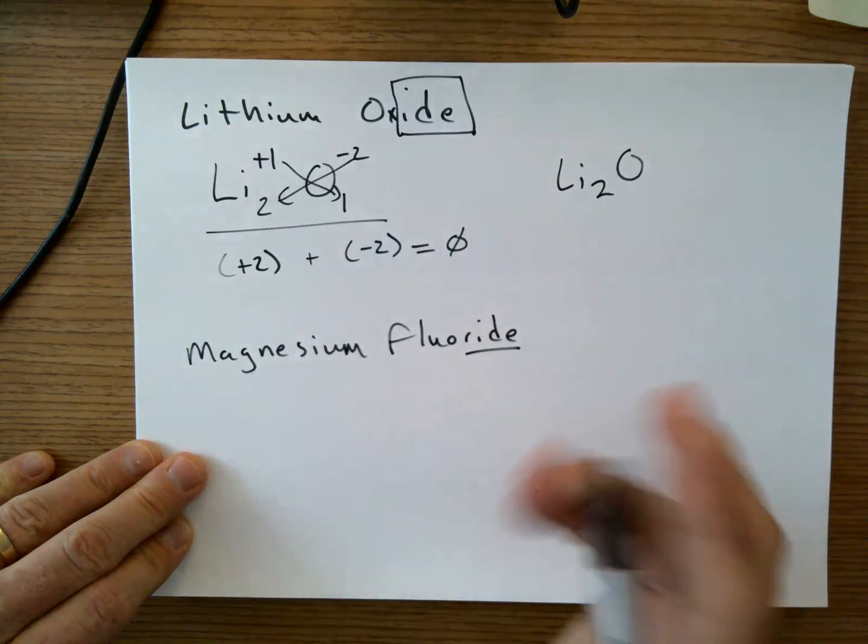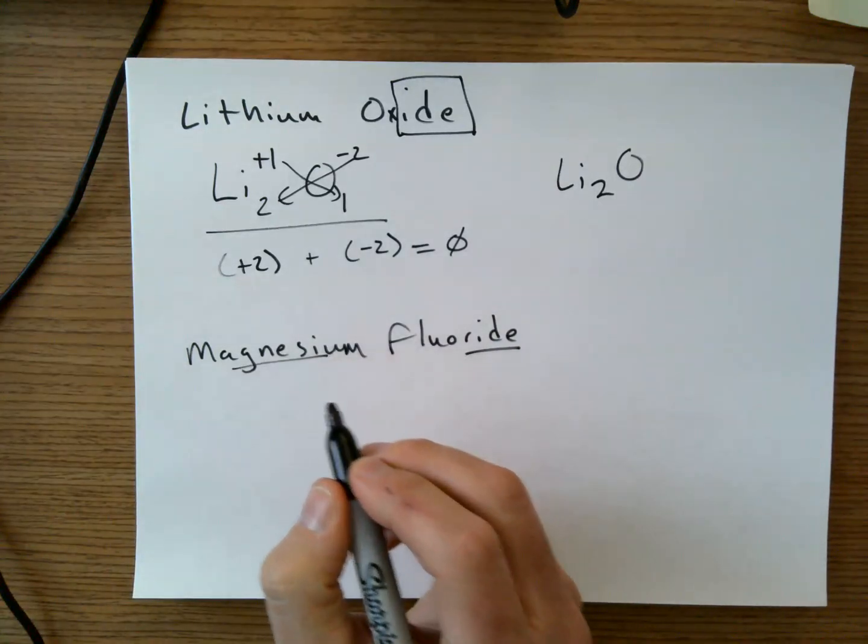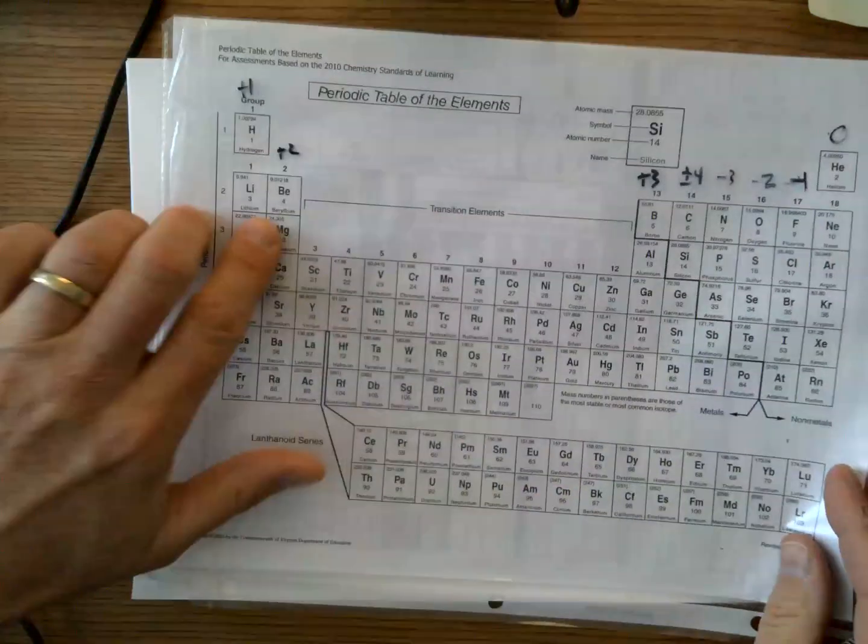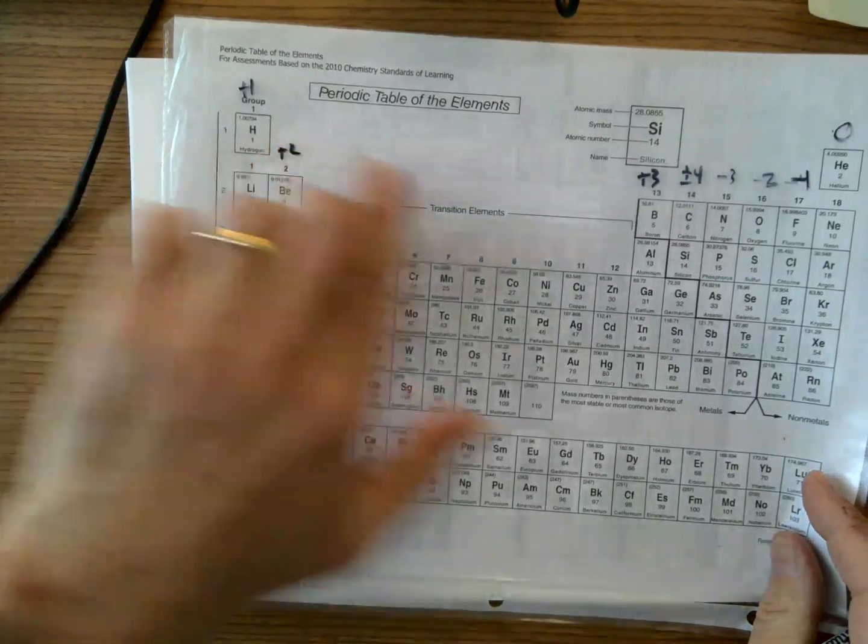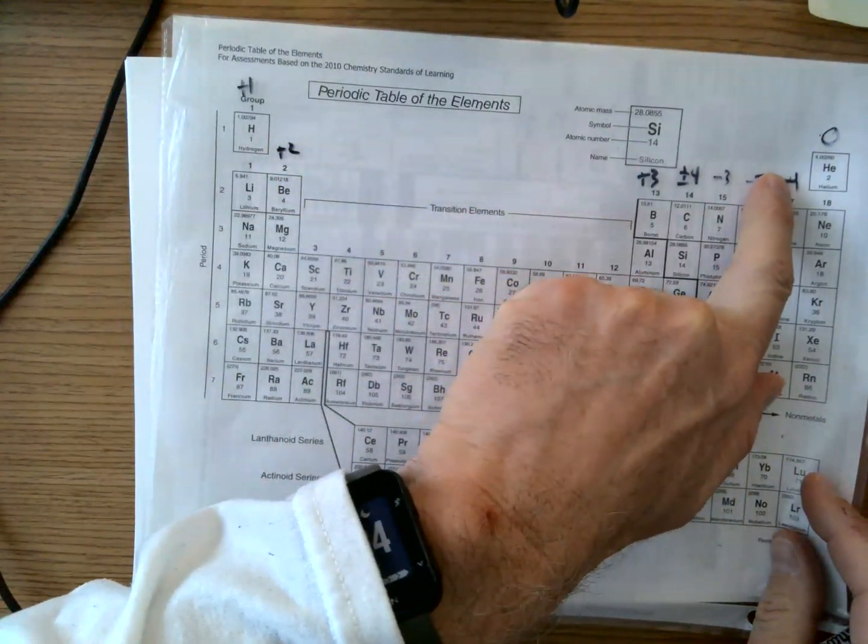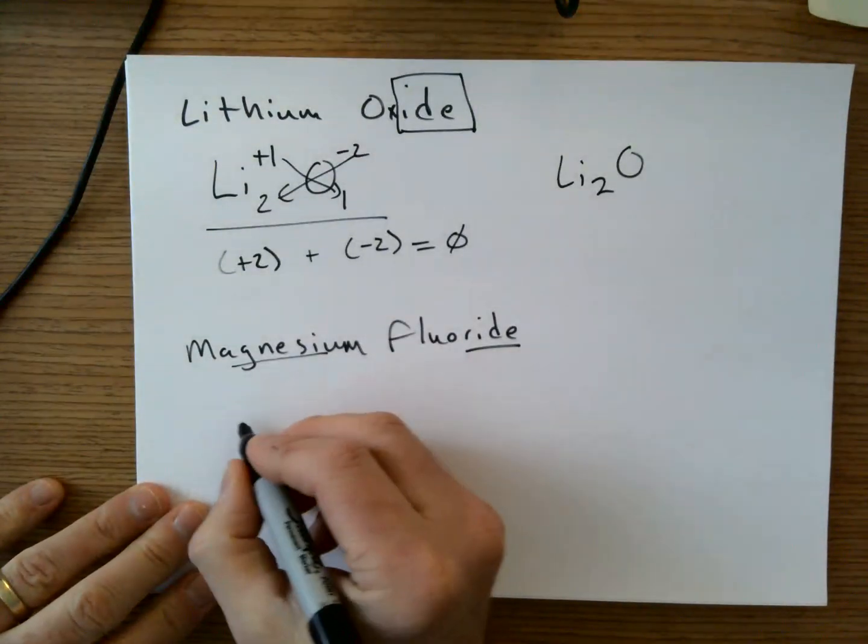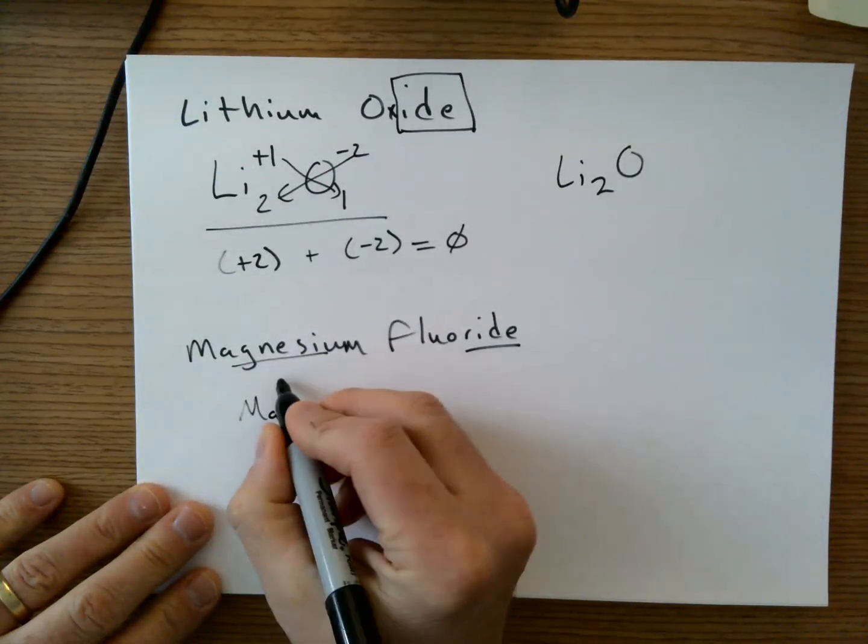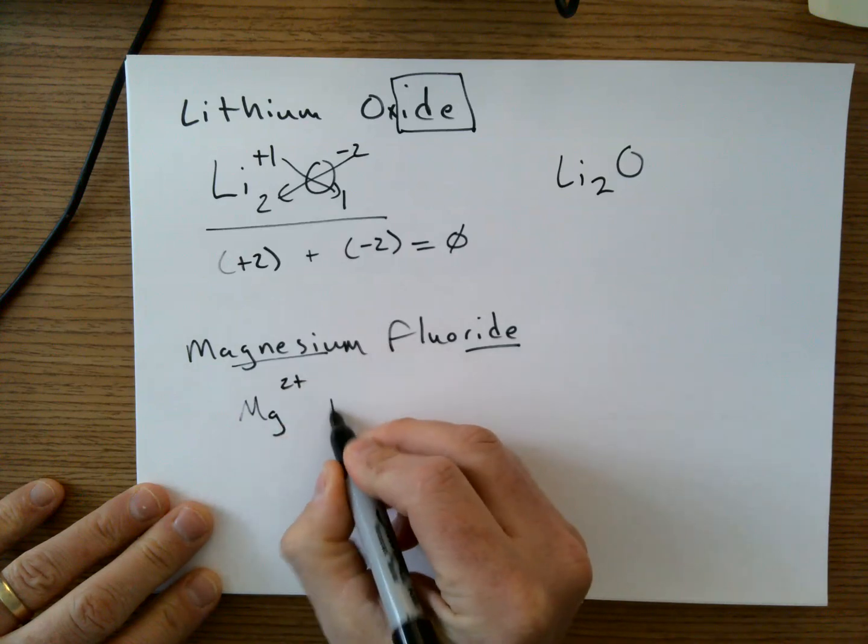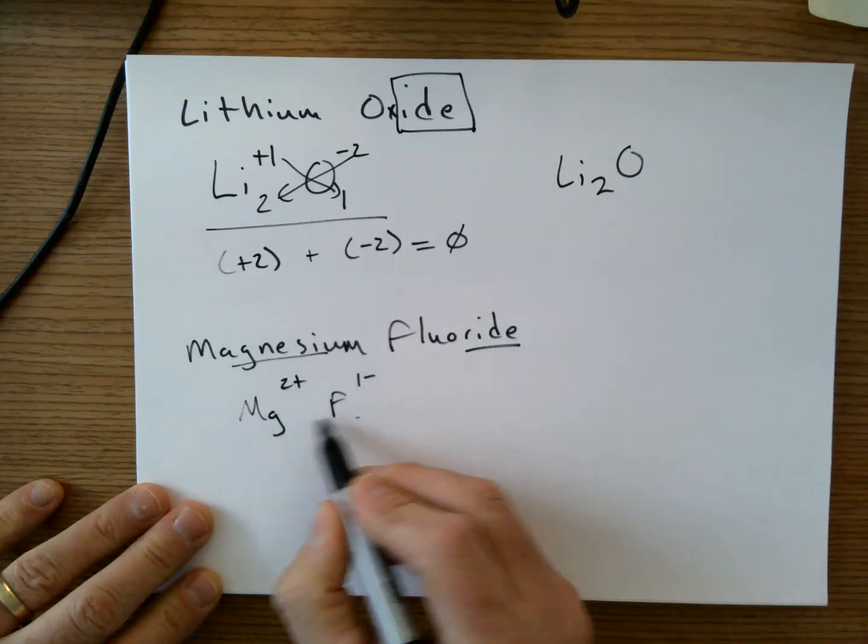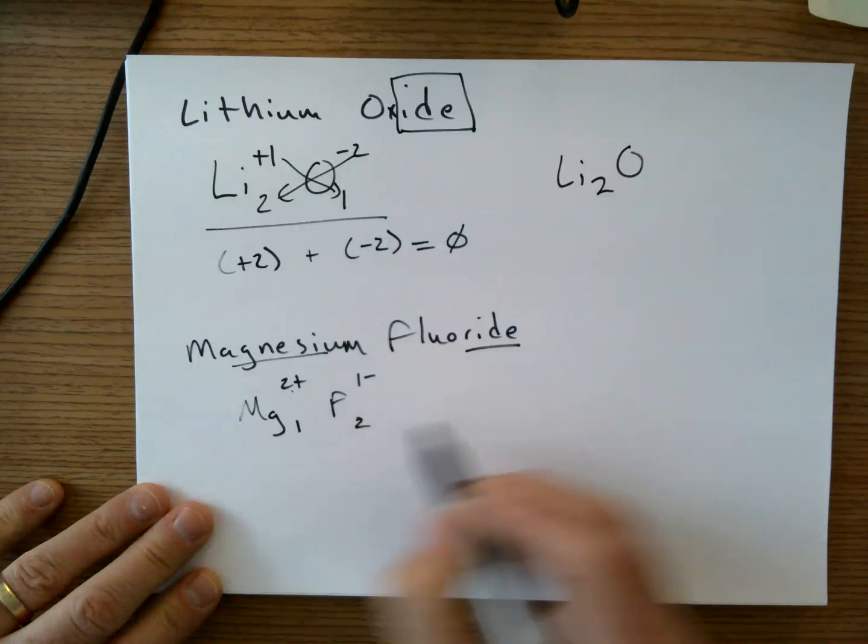Let's try another one. Again, IDE, this is a binary compound. Magnesium is a metal. Magnesium is here. Plus two. Chloride is over here. Minus one. So let's go ahead and rewrite the symbols with the oxidation states. And we are going to crisscross just the numbers.